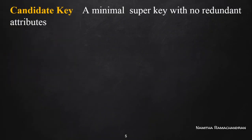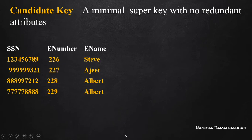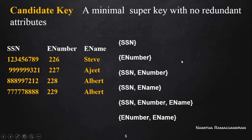A candidate key is a subset of super keys — specifically, it is a minimal super key with no redundant attributes. From the set of all possible super keys of the employee table, we need to extract the minimal ones — super keys from which no attribute can be removed while still uniquely identifying each row.